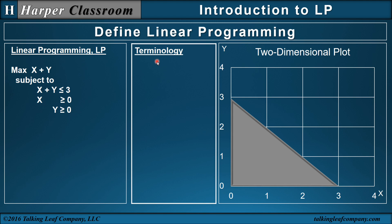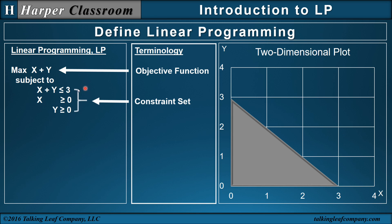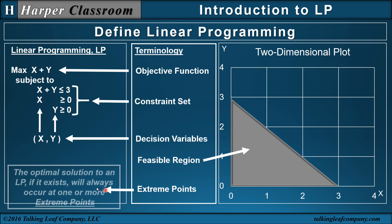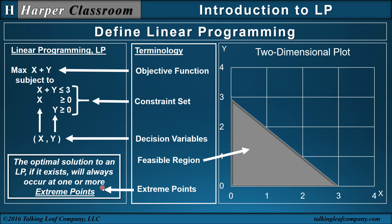So now let's look at terminology, which is important — it's how we describe, explain, and analyze things. The objective function is the x plus y — not the maximum, just the expression in that area. Next is the constraint set — all of our inequalities represent the constraint set. Next are the decision variables — in this case we have two, x and y; later we will have more. Next is the feasible region — the region of points which satisfy the constraint set. And finally, extreme points.